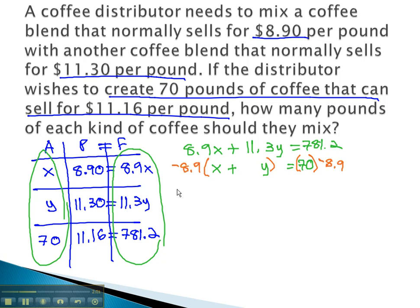The first equation is now unchanged. 8.9x plus 11.3y equals 781.2. Distributing through the second equation gives us negative 8.9x, negative 8.9y, and 70 times negative 8.9 is negative 623.